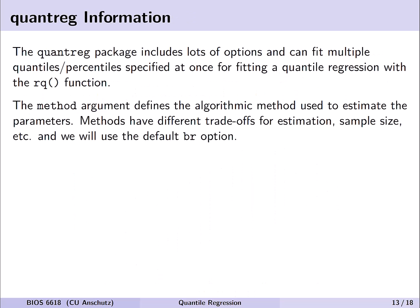So let's first introduce this package to get us up to speed to be able to use it and see the example. The quantreg package includes lots and lots of options, and we're going to see a small little snippet of them here. And one of the cool things we can do is fit multiple quantiles or percentiles at once within the quantile regression framework using this rq function. Now you'll see if you look at the help documentation, there's a method argument that defines the algorithmic method used to estimate the parameters. As I mentioned, there's multiple ways one could approach this, and the methods will have different trade-offs for estimation, sample size, and so forth. But we'll, for today's example, focus on just using the default BR option.